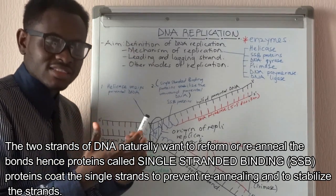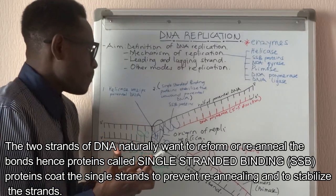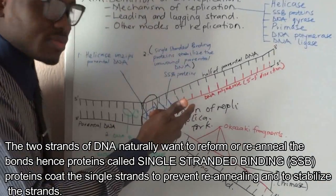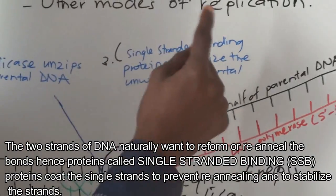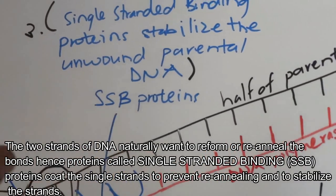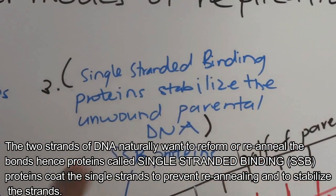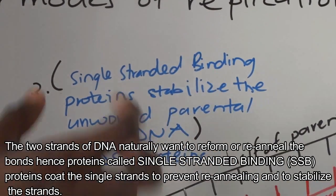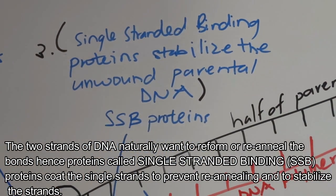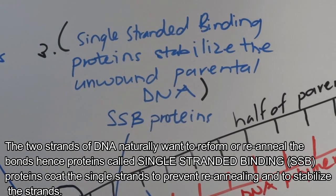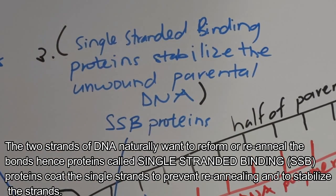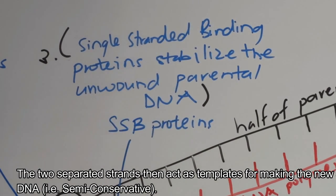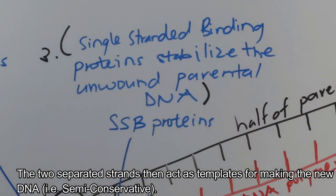To prevent reannealing, we have a protein called the SSB protein — single-stranded binding protein. This binds to the two strands of the DNA molecule, one strand on top and the other below, to stabilize the unwound parental DNA and prevent it from coming back together so that replication can take place.